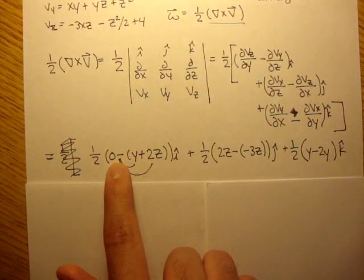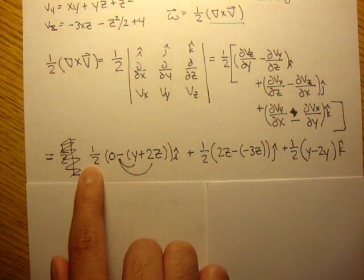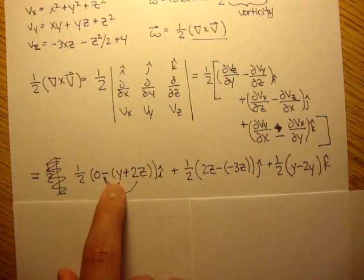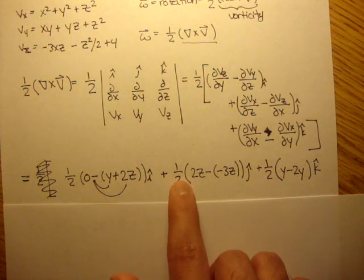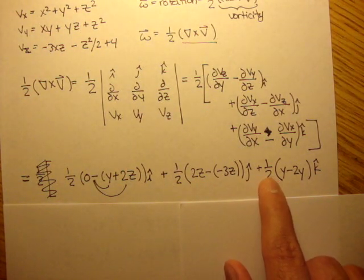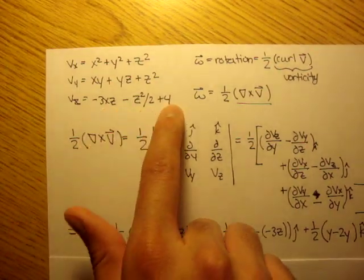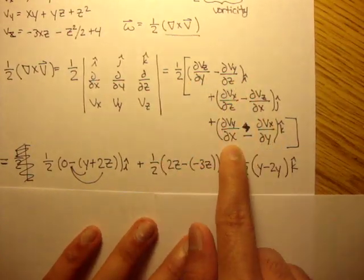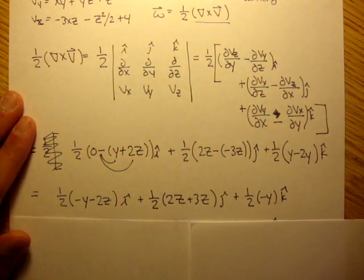And after we simplified it and plugged in the partials, we get this. We get 1 half 0 minus the quantity y plus 2z in the i direction. We get plus 1 half 2z minus negative 3z in the j direction, plus 1 half y minus 2y in the k direction. Remember, you can plug the partials of these into here and solve that out and you get this. So I'm just saving you some time.